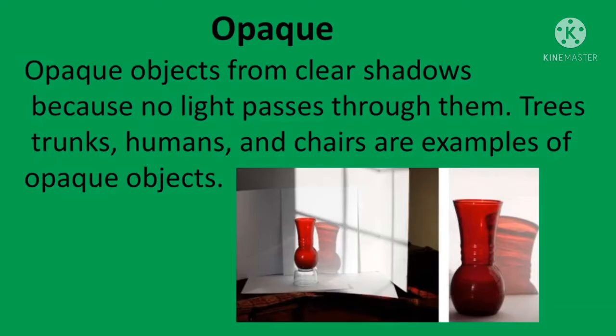When light strikes an opaque object, it is either absorbed by the object or bounced off and reflected. White objects reflect light, which is why they are cooler to the touch, while dark objects absorb light and transform it into heat. The way an object reflects light is divided into three groups: transparent, translucent, and opaque. An example of an opaque object is an apple — the color reflected is red because all other colors in the light spectrum are absorbed by the apple.